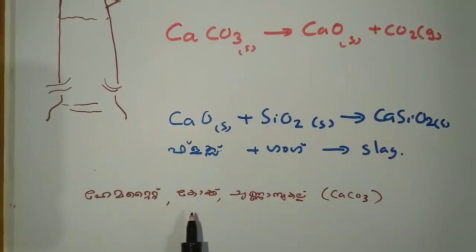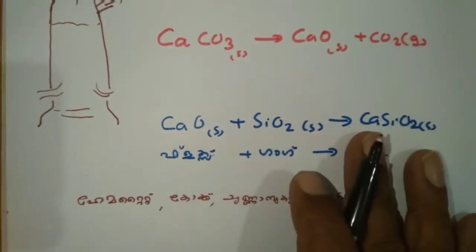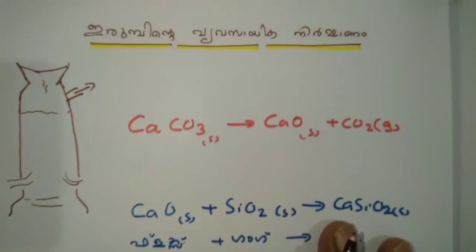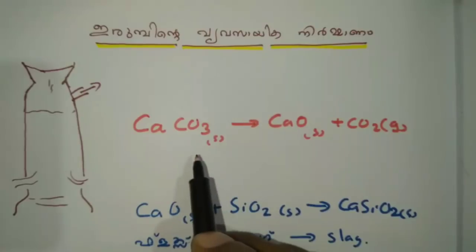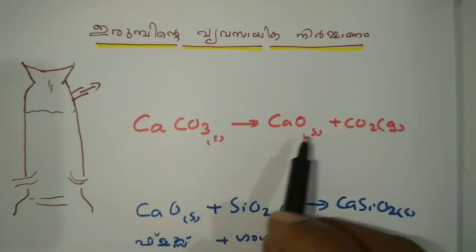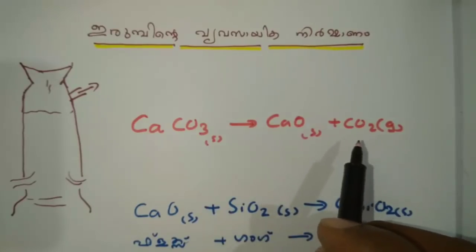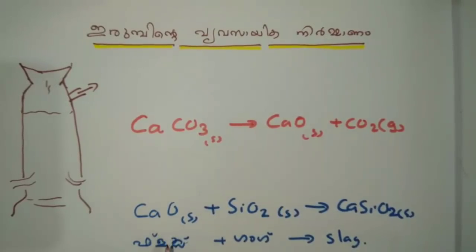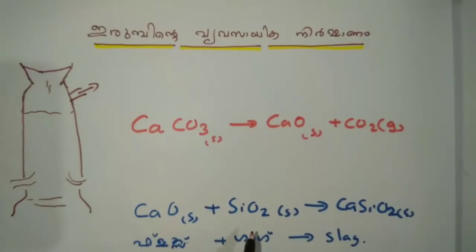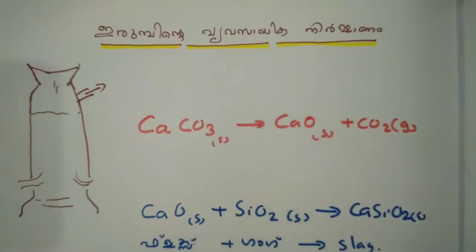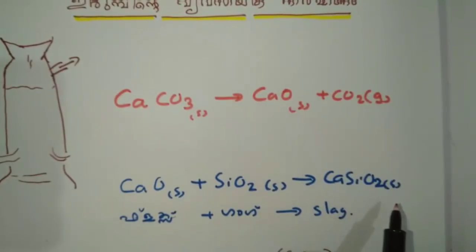It's called hematite, coke, and limestone. Calcium oxide is also carbon dioxide. This calcium oxide reacts with silicon dioxide, and a small amount of carbon dioxide is produced. Calcium silicate is the slag.